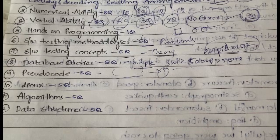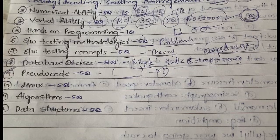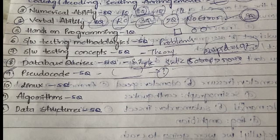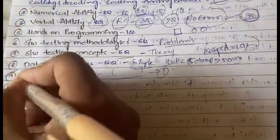In the Linux section, most questions were about identifying the output of a shell script or finding errors in it. In the 13th April paper, no conceptual Linux questions were asked — all questions were about predicting the output of given shell scripts, though concepts have appeared in other papers.